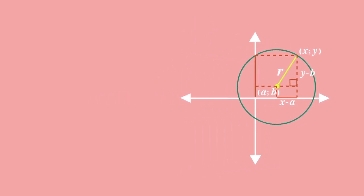The length parallel to the x axis is x minus a and the vertical length is y minus b. So the radius squared equals x minus a all squared plus y minus b all squared. Note that if a is 0 and b is 0, then the equation will be r squared equals x squared plus y squared, which is the equation of a circle with centre 0, 0.